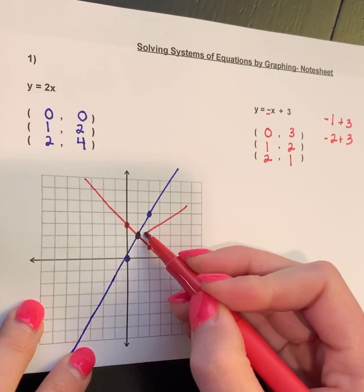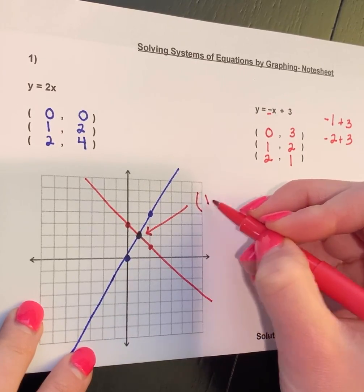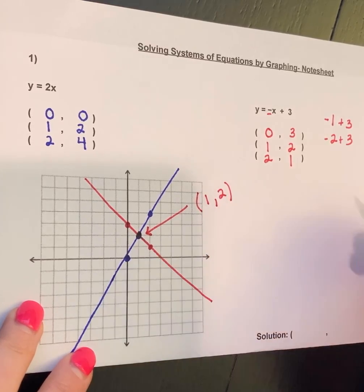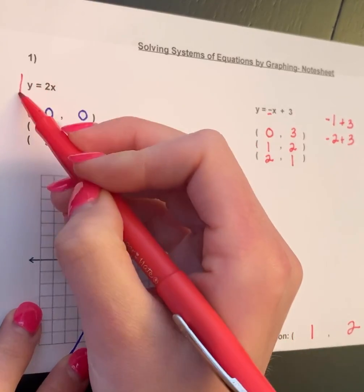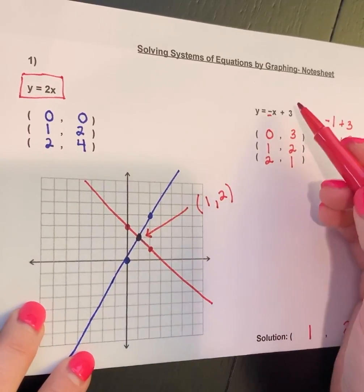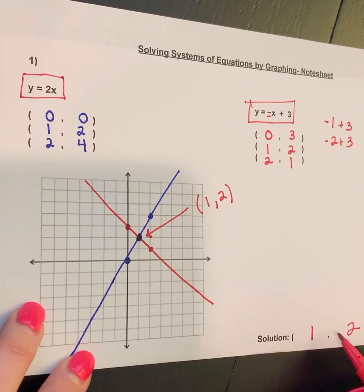In this case, it's pretty obvious where they cross. They cross at a nice point here at (1, 2). So my solution for this system, y = 2x and y = -x + 3, they will cross at (1, 2).